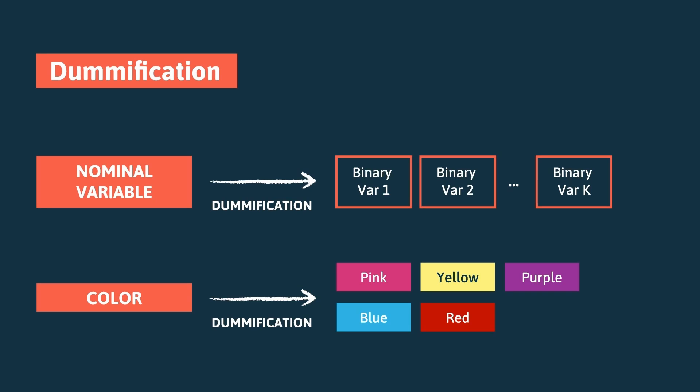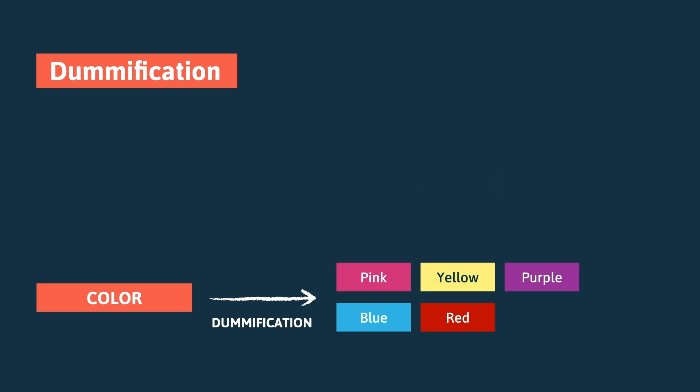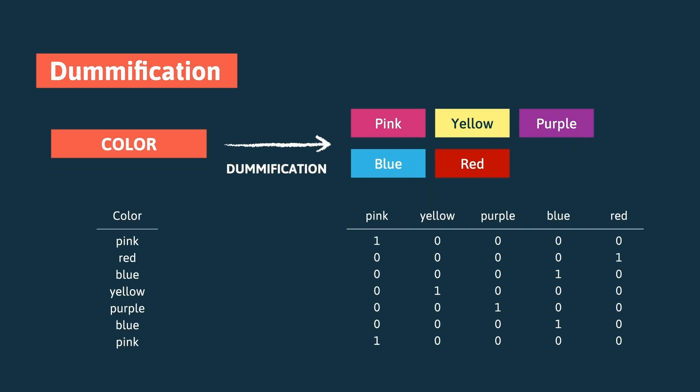In this case, the variable color will generate five binary variables and each value in the original record would be translated into the five new dummies. And so, for the pink flower, only the pink variable would be one while all the four others will be kept to zero.